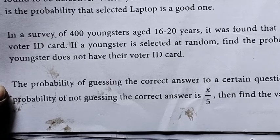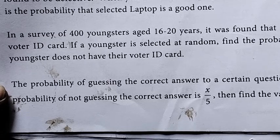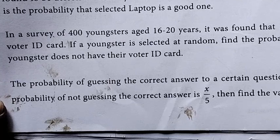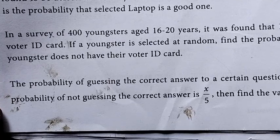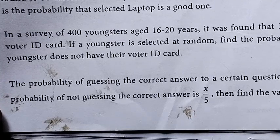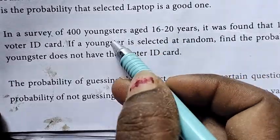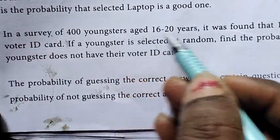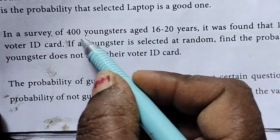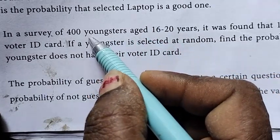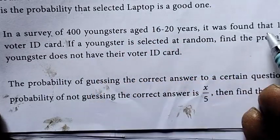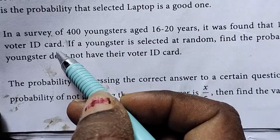Dear students, welcome to online class with Hema. 9th chapter probability, exercise 9.2, second sum. In a survey of 400 youngsters aged 16 to 20 years, out of 400 members, 191 have the voter ID.